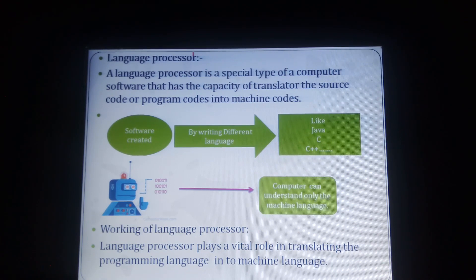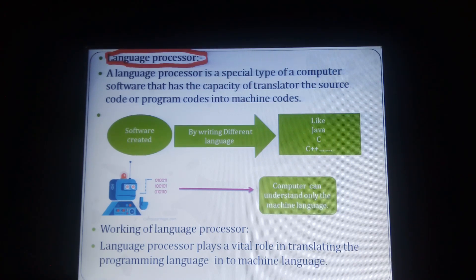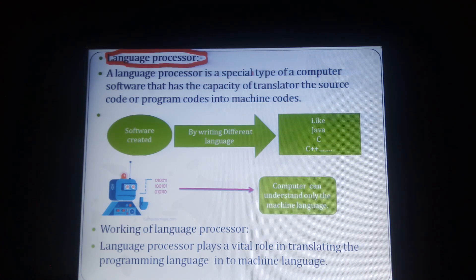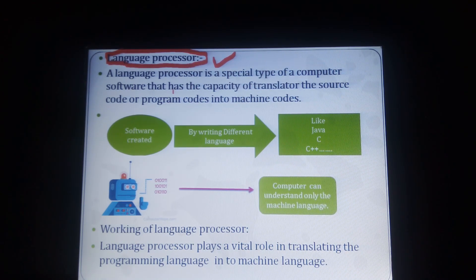Next one is language processor. A language processor is a special type of computer software that has the capacity to translate source code or program code into machine code. Suppose I write something — the computer cannot directly understand it; a language processor translates it. Source code means whatever you are writing. Language processor translates the source code or program code into machine code, which is the machine-understandable format.